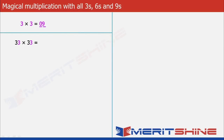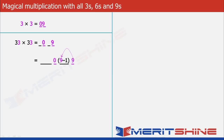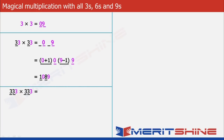Now what if it was 33 × 33? It is still very simple. Let's take the answer of 3 × 3, which is 09, and make some improvisations. We will add 1 blank each to the left of each digit of the answer. The blank to the left of 9 will be decreased by 1 and the blank to the left of 0 will be increased by 1, thereby giving us 1089 as our answer.